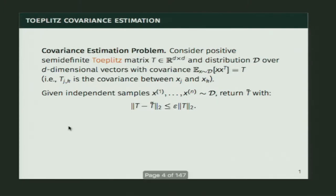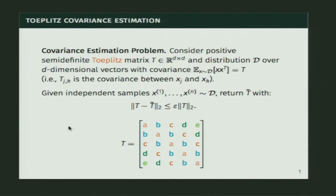Today we're looking not at the general problem, but specifically when we have a really structured covariance matrix — specifically when the matrix is Toeplitz. A Toeplitz matrix is one where all the diagonals are the same as each other. It's a very structured matrix: instead of d-squared parameters, it's parameterized by just d parameters.